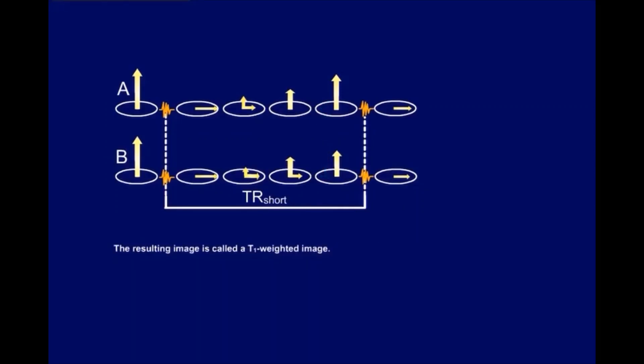The resulting image is called a T1-weighted image. This means that the difference of signal intensity between tissues in that image, the tissue contrast, is mainly due to their difference in T1.